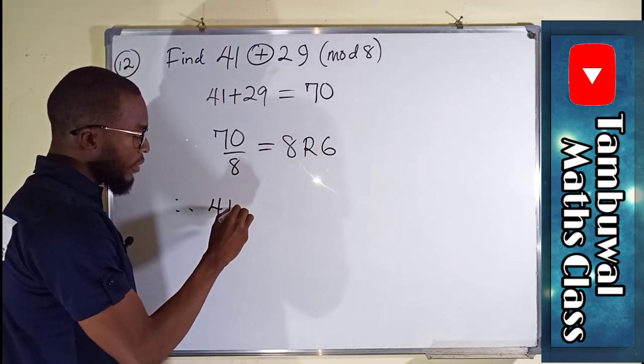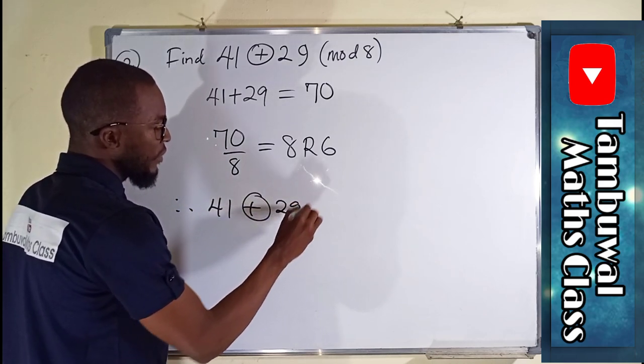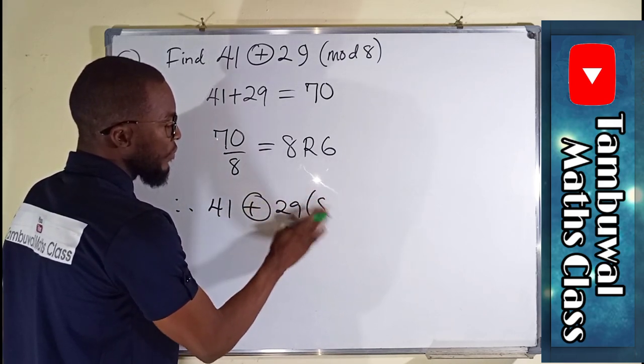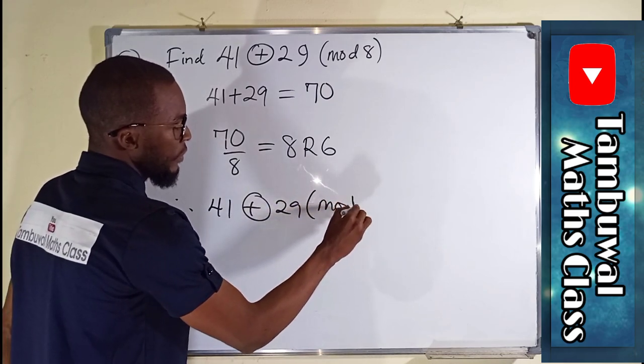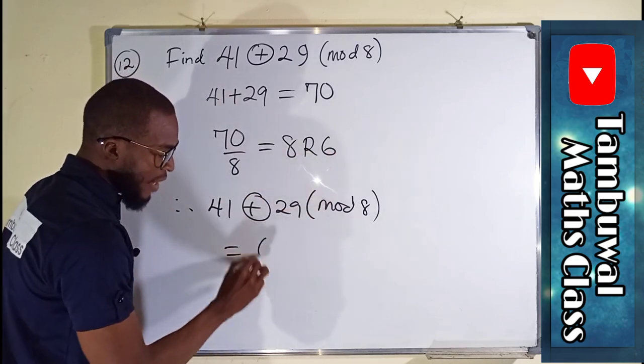Therefore, 41 plus 29 in mode 8 is just equal to the remainder, which we have here at 6.